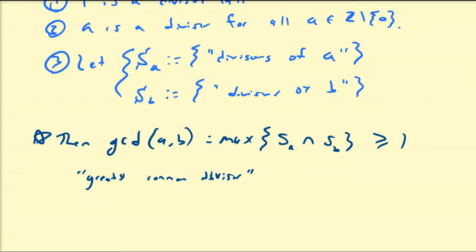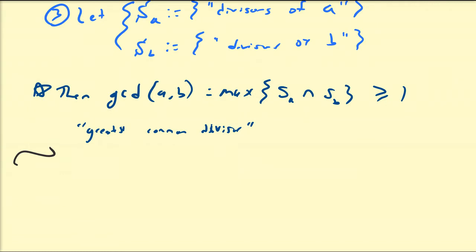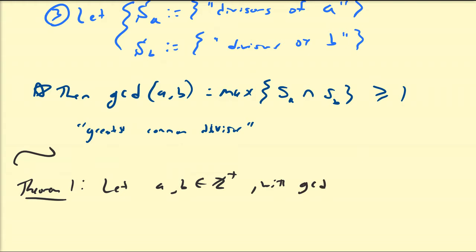Let's look at the first theorem we're going to prove, which is probably very useful and you may already be familiar with when we talk about irreducible fractions. We're going to begin by letting A and B both be in the set of integers, and without loss of generality we can assume both are positive. If one is negative and one is positive we can factor out a negative 1; if both are negative their quotient is positive. Let us assume the greatest common divisor of A and B is equal to some number D.